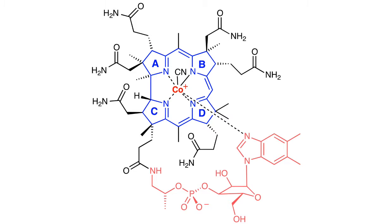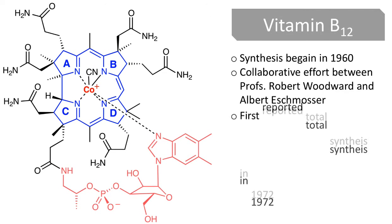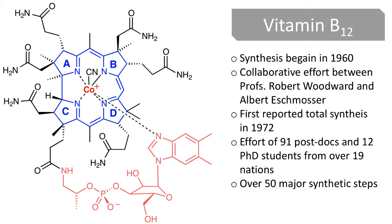But imagine that you had to make something like this huge molecule — it has over 63 carbons. It would seem impossible to know what to even begin with in order to start constructing this monster. It turns out this is vitamin B12, and this was a synthetic challenge for chemists for a number of years. Its synthesis began in 1960 as a collaborative effort between professors Woodward and Eschenmoser. Its first total synthesis was reported in 1972, involving the effort of over 91 postdocs, 12 PhD students from over 19 nations, and the total synthesis was more than 50 steps.